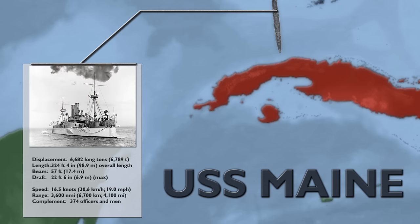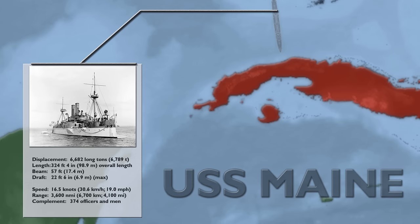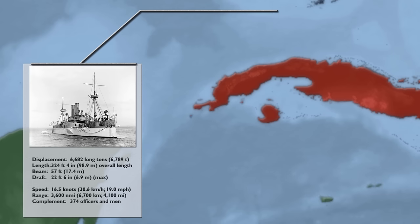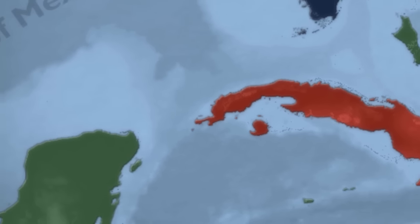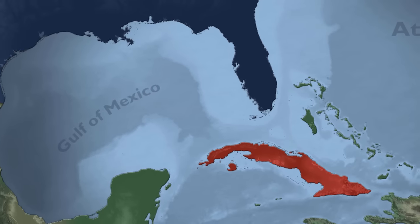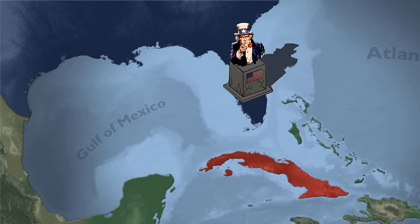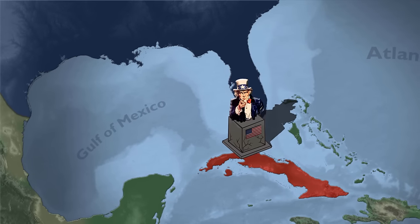The ship had been sent to Havana to aid American citizens who had gotten stuck in the new rebellion. While the official US Naval Court of Inquiry simply blamed a mine for the blast, not pointing any fingers directly at Spain, the American people seemed convinced that the culprit was obvious, and even Congress called for a declaration of war on Spain. On April 25, 1898, they got their wish.